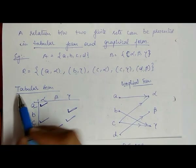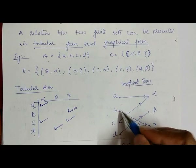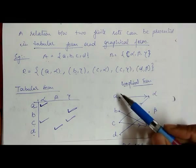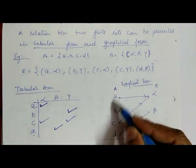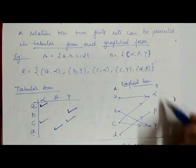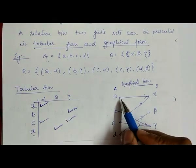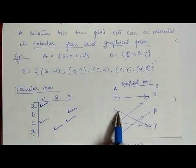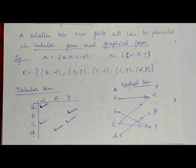If we represent this same relation in graphical form, on one side we represent all elements of A and on the other side all elements of B. Set A contains a, b, c, d and set B contains alpha, beta, gamma. We connect the pairs: (a, alpha), (b, gamma), (c, alpha), (c, gamma), and (d, beta) with directed arrows.